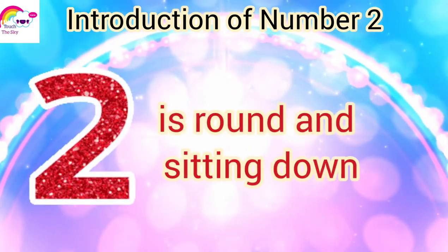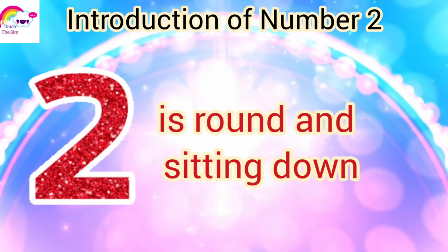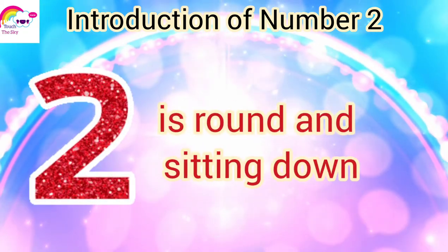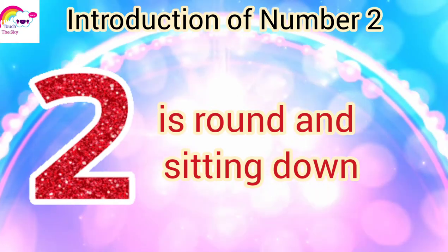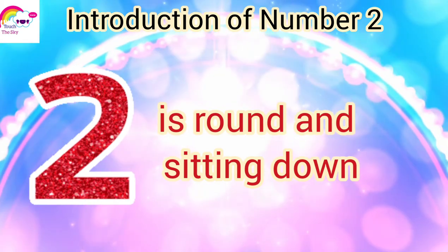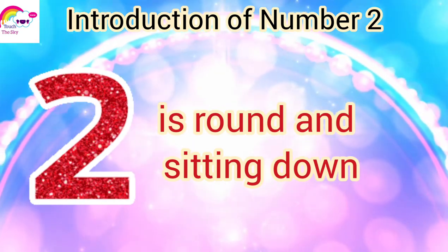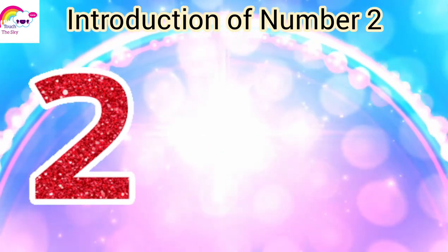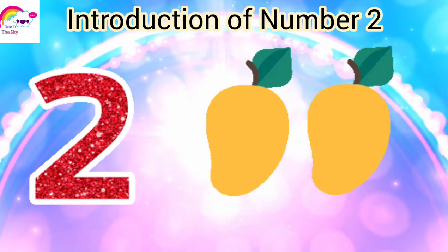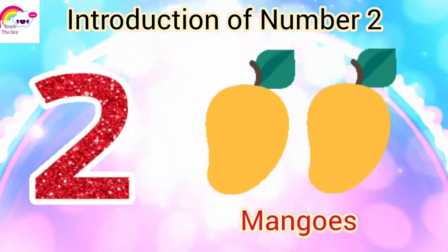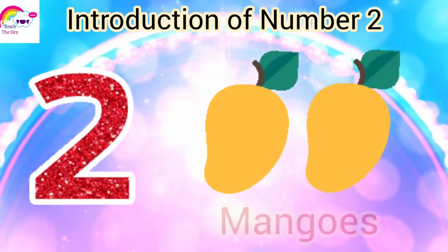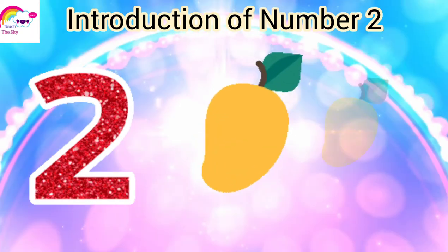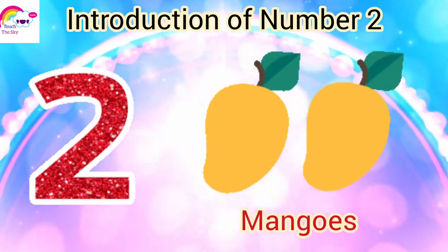Two is round and sitting down. Now let us learn the values of number two. Let's count the objects — here are two mangoes. Let's count them: one, two. Two mangoes.